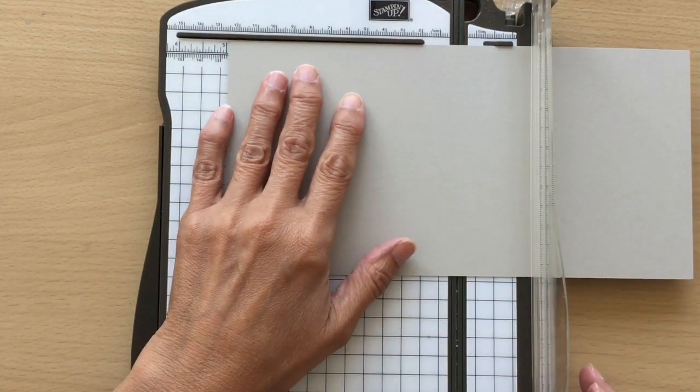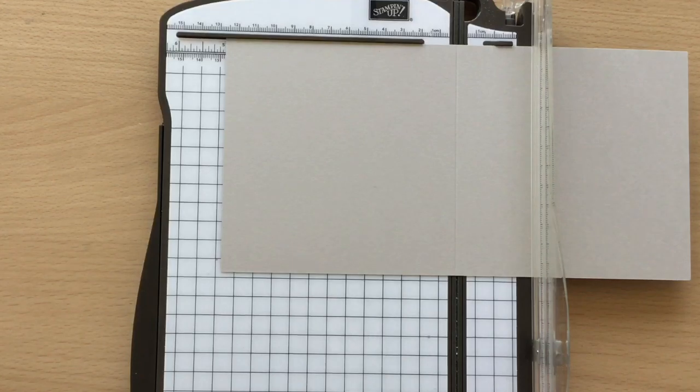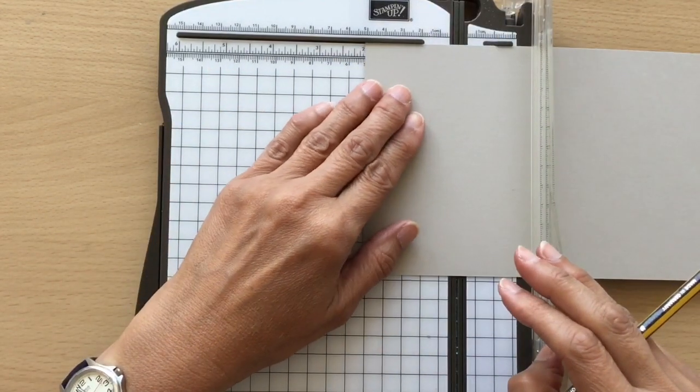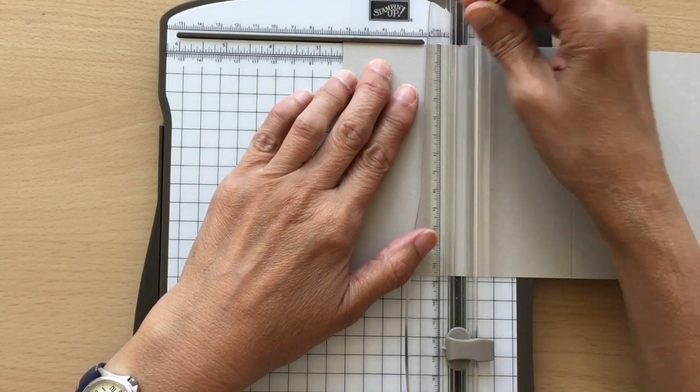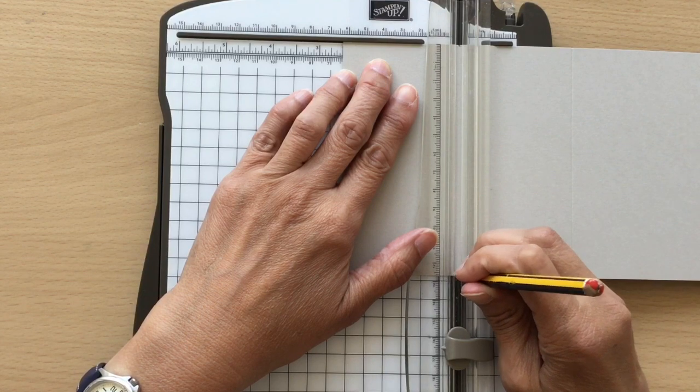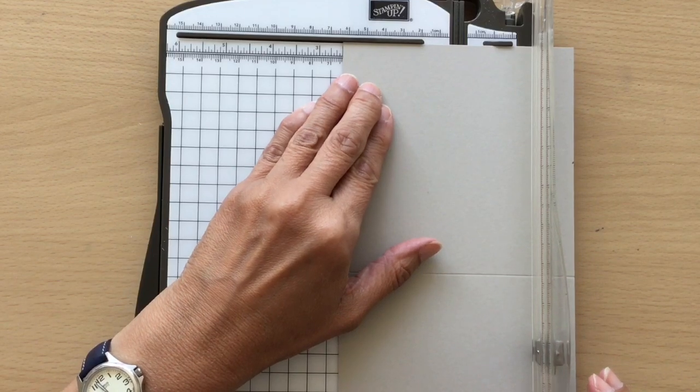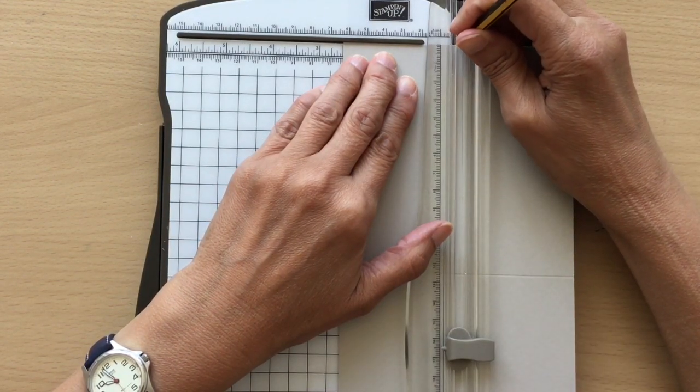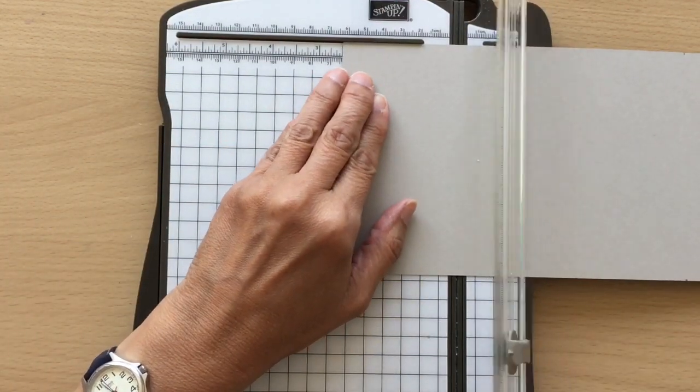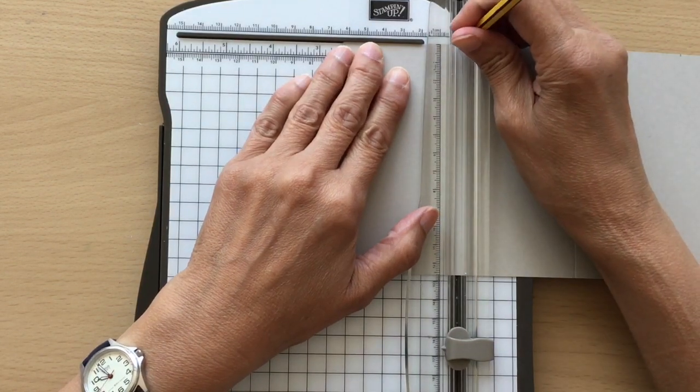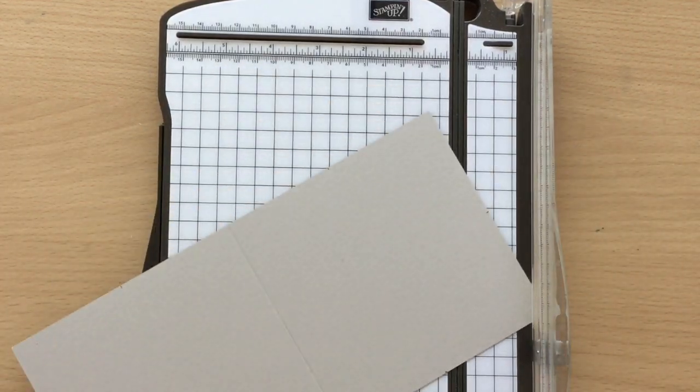We're going to start alongside at the top on 5 inches and we're going to score 5 inches. Then I'm going to get my pencil and go to 2.5 inches and put a little mark at both ends. Then I'm going to turn it around and at 2.5 inches again, finding the middle and putting a little mark there.